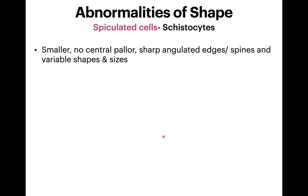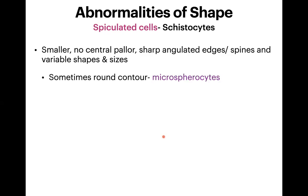Schistocytes mostly have sharp edges and spines, but sometimes they can also have a round contour — like microspherocytes. However, consider them microspherocytes and schistocytes only when the other abnormal-shaped cells are also present on the smear.